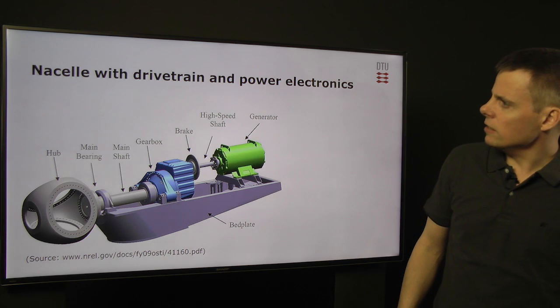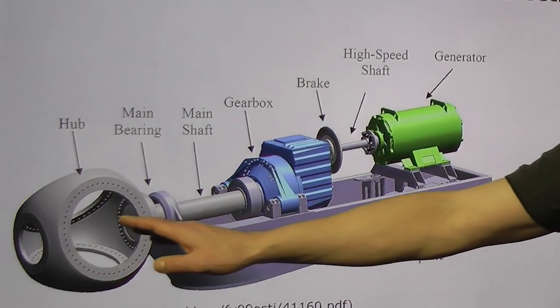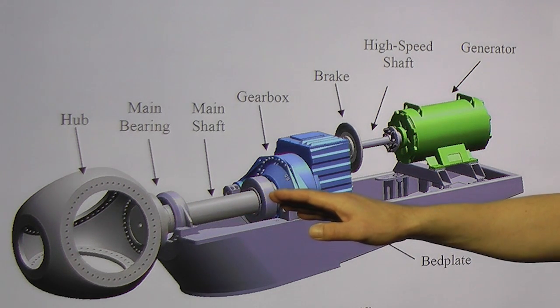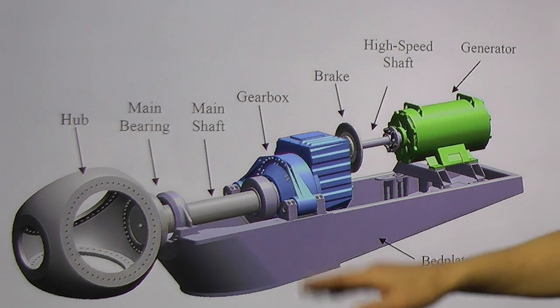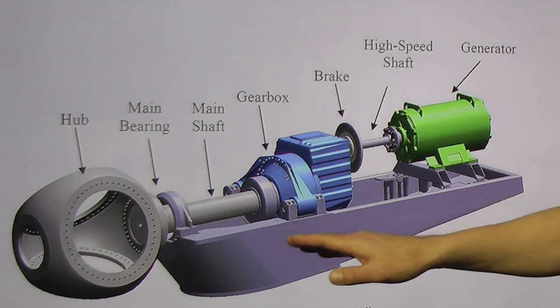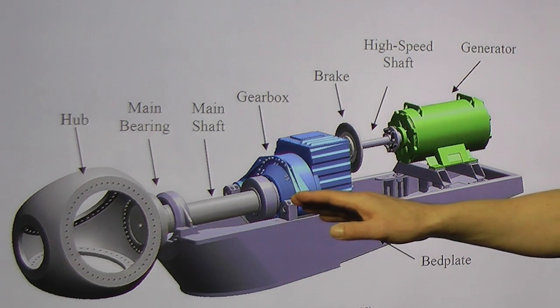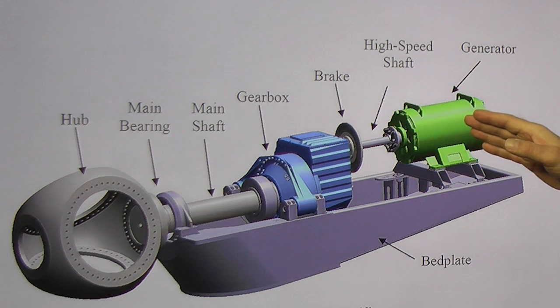If we look at the nacelle, it consists of the drivetrain that converts the aerodynamic torque that goes in through the hub, through the main shaft, or also called the low-speed shaft. It is held by the main bearing and a gearbox, where there is also a bearing. And it translates the speed of the low-speed shaft into a high-speed shaft that goes into the generator.